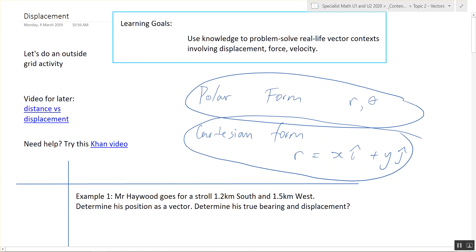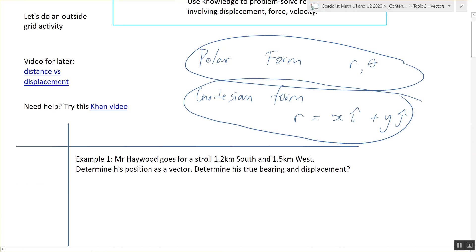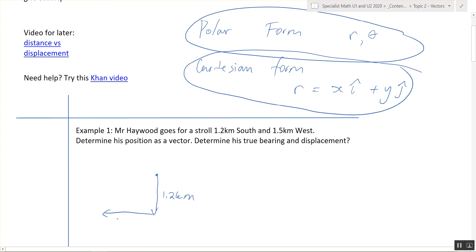This first example is given us in what form? Cartesian. So I've gone for a stroll. I've gone south 1.2 kilometers, and then I've gone west 1.5.